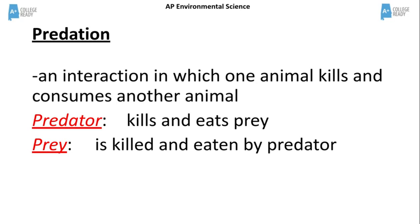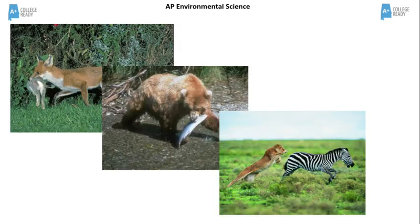Another type of species interaction is predation. Predation occurs when one animal kills and eats another one. The predator kills and eats the prey. Some examples shown are the fox killing the rabbit, the bear eating the fish, and the lion chasing the zebra.